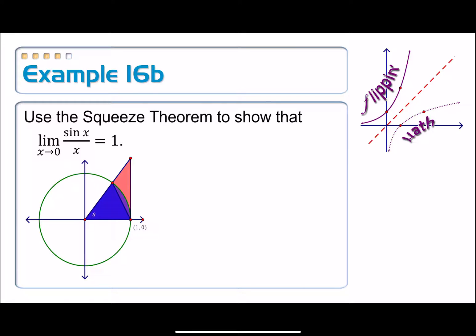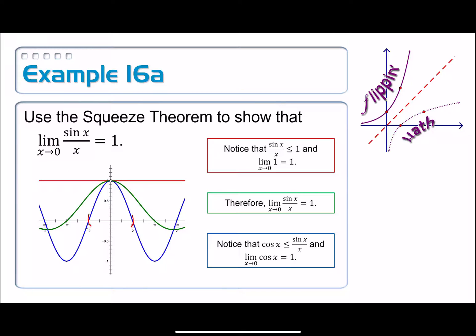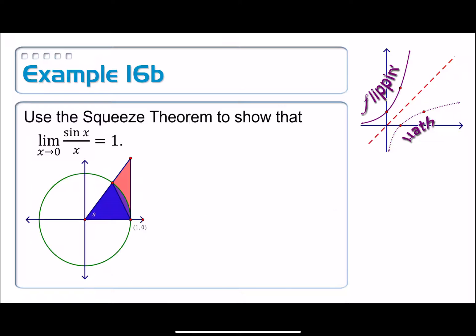We're back with 16b, still trying to use the squeeze theorem to show that the limit as x approaches 0 of sine x over x is equal to 1. We had an idea using some graphs, and we're going to see why we chose specifically cosine for the bottom and 1 for the top. We're going to establish that geometrically, calling upon geometric knowledge from pre-calculus.